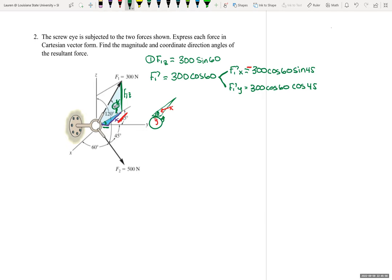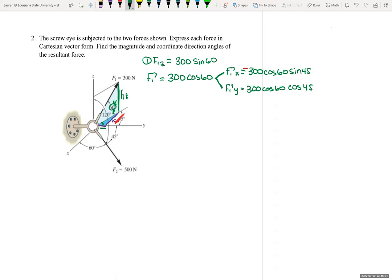All right, so now we can find our F1. We can write our F1 in Cartesian vector form. So it's just 300 sine 60. You have to start with F1.